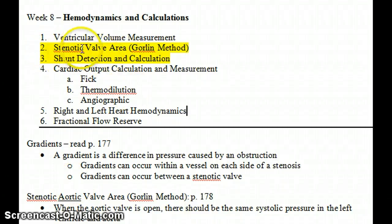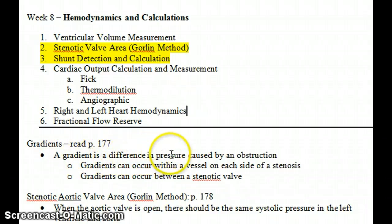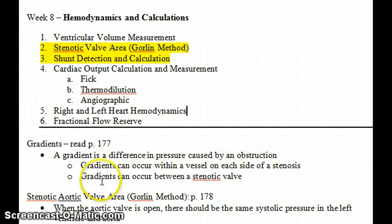This lecture is about learning how to calculate the stenotic valve area using the Gorlin method. First we need to define what a gradient is. There's a good description of it on page 177, but basically a gradient is just a pressure difference caused by an obstruction. So there can be a gradient on either side of a stenosis, or there can be a gradient across a valve, and that valve would be termed stenotic.